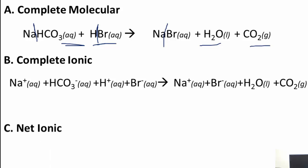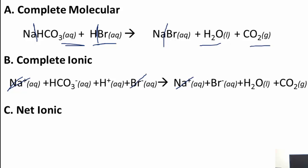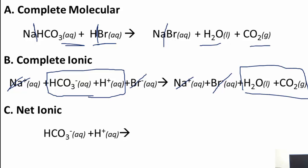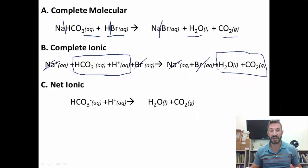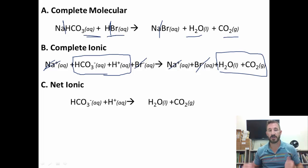For the net ionic equation, we remove spectator ions — anything aqueous on both sides. The sodium ion is aqueous on both sides, so we cancel it. The bromide ion is aqueous on both sides, so we cancel it too. What's left is the net ionic equation: H⁺ + HCO₃⁻ → H₂O + CO₂. Those are two great examples of how to write reactions — one with a weak acid and a solid, one with a strong acid and an aqueous solution. Let me know if you have any questions.